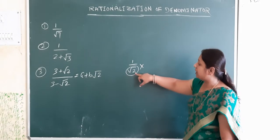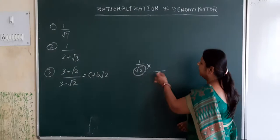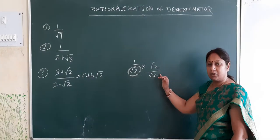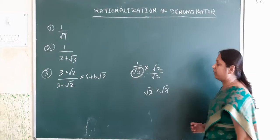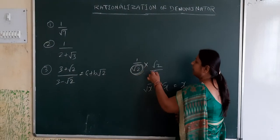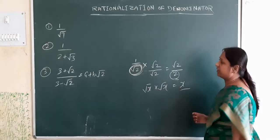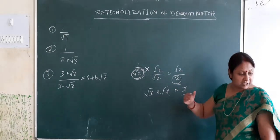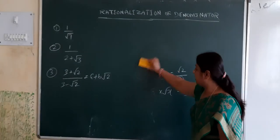By suitable number, it means the number by which we multiply root 2 so that we get a rational number. Obviously, we multiply and divide by root 2. Then we get root 2 by root 2, which gives root 2 over 2, where 2 is a rational number. That is why we rationalize the denominator — to make the division possible.